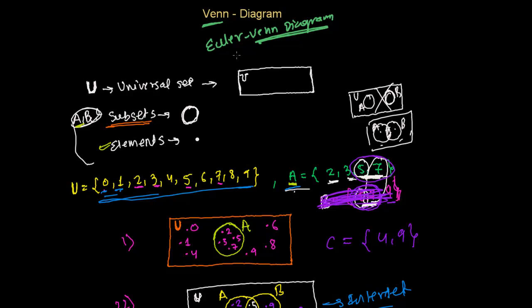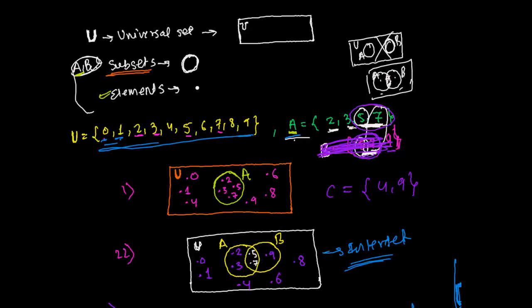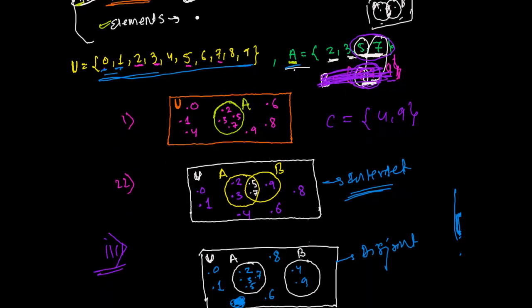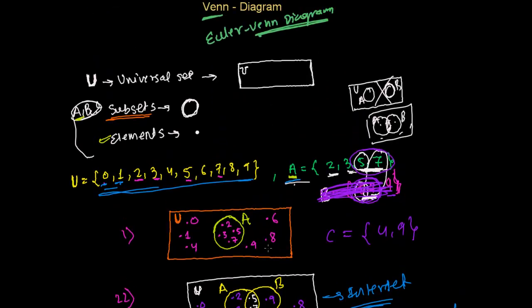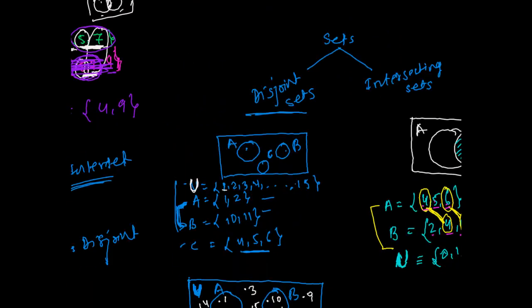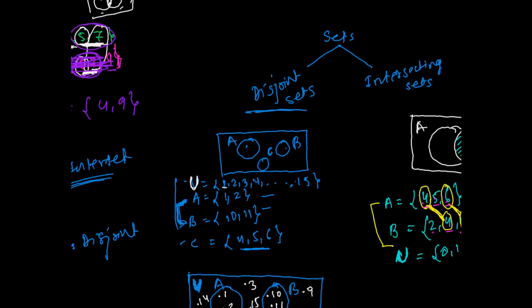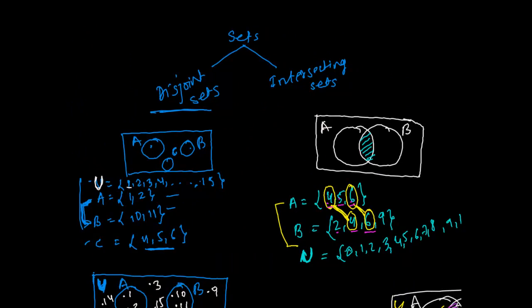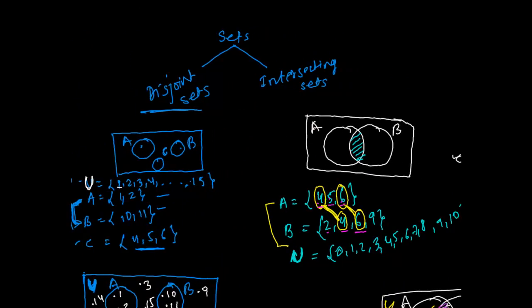Till now, in Venn diagram, we have learned what is exactly a Venn diagram, what does it mean, and how to represent set relations into a Venn diagram. And then we learned two types of sets: disjoint sets and intersecting sets. After learning all these concepts, we are now ready to learn some operations on sets, and I am going to start with the first operation, which we call union.